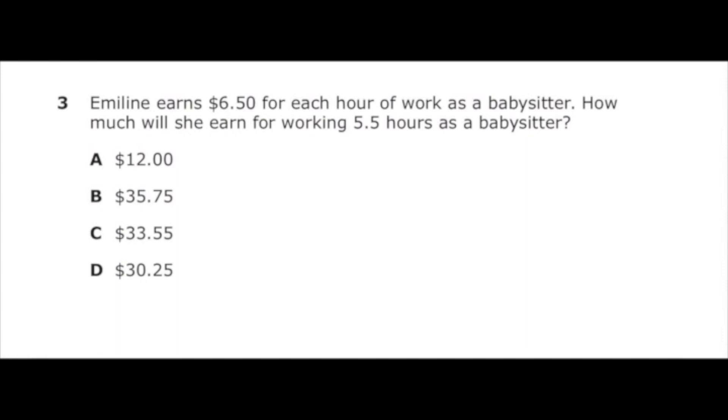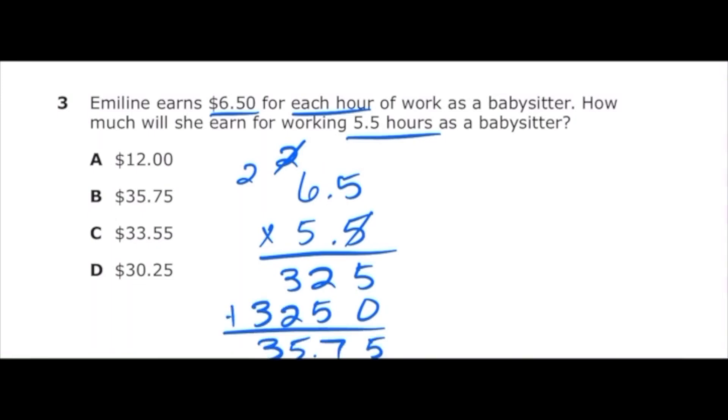Number 3 from the 2022 sixth grade math STAR test says Emmeline earned $6.50 for each hour of work as a babysitter. How much will she earn for working 5.5 hours as a babysitter? So if she's earning $6.50 an hour, all we need to do is multiply 6.50 times 5.5. Just to make it a little bit easier, I'm going to change 6.50 to 6.5 and multiply that by 5.5, and once I do that I should get 35.75, which is letter B.